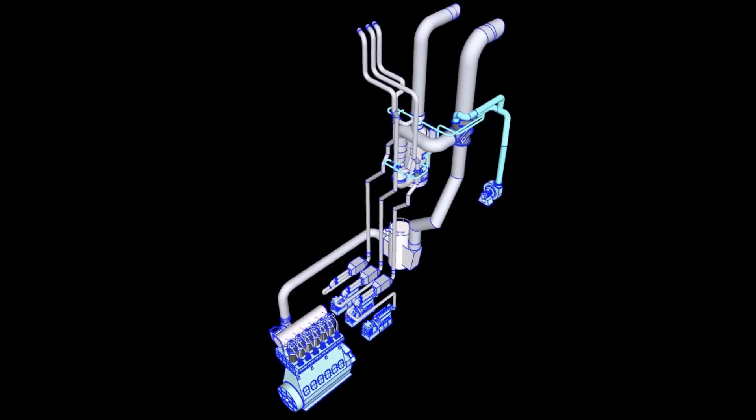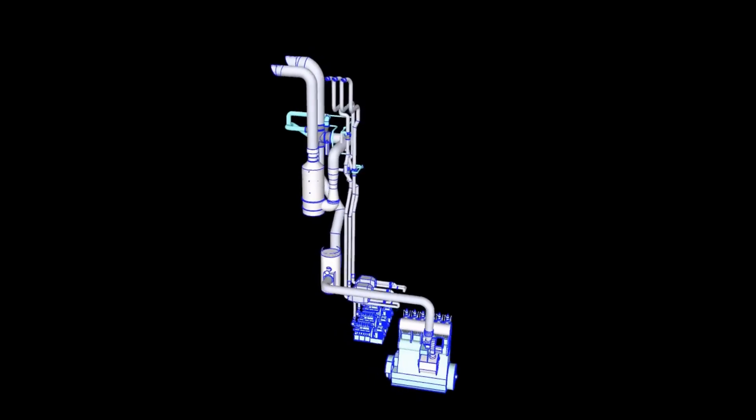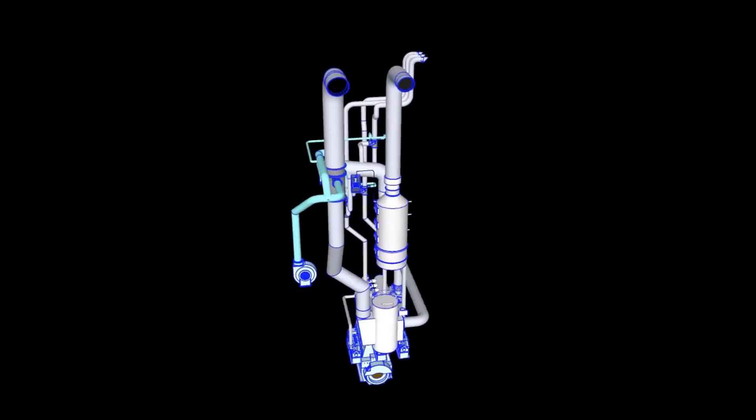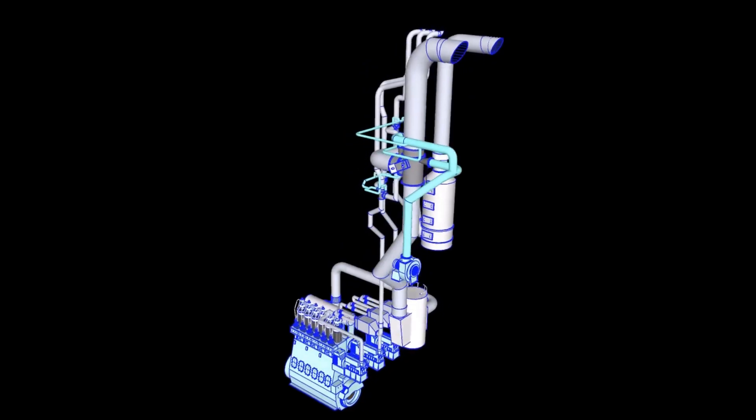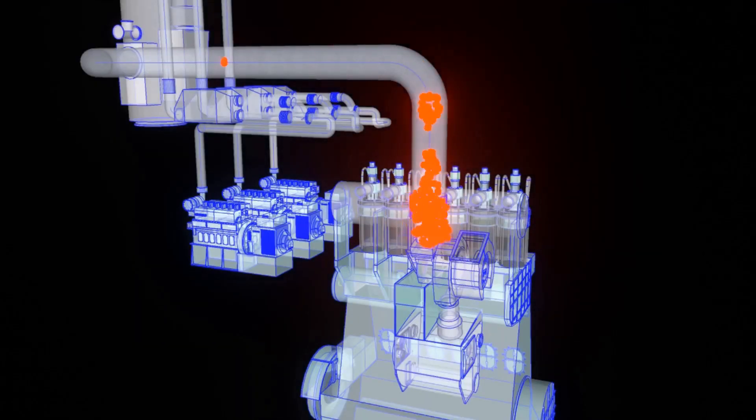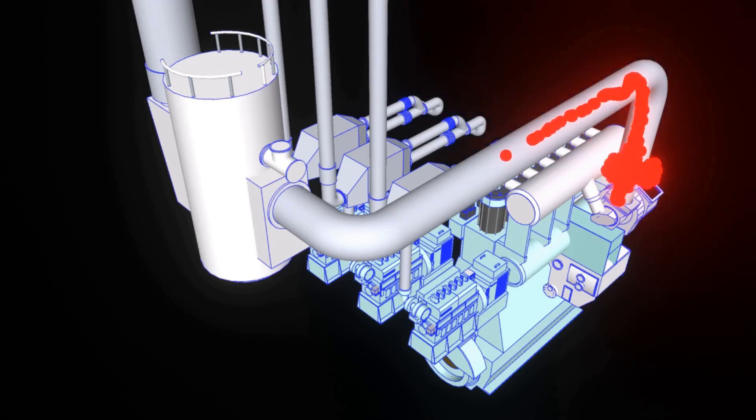This is the exhaust gas system of main engine with scrubber. After the combustion chamber, the gas will leave the engine from the turbocharger. Then it will go directly to the economizer.